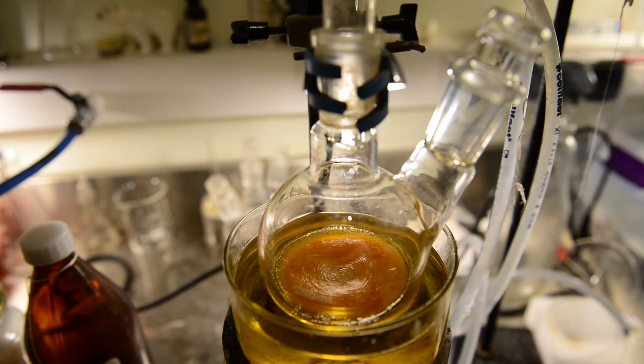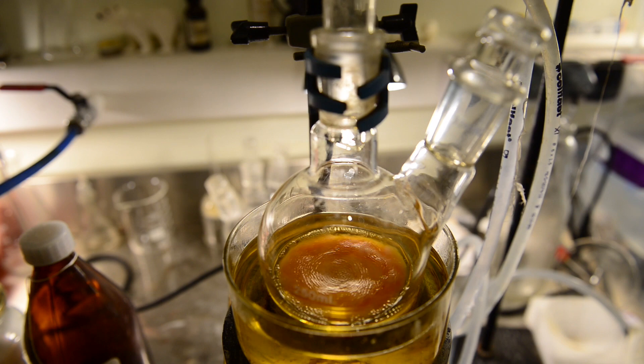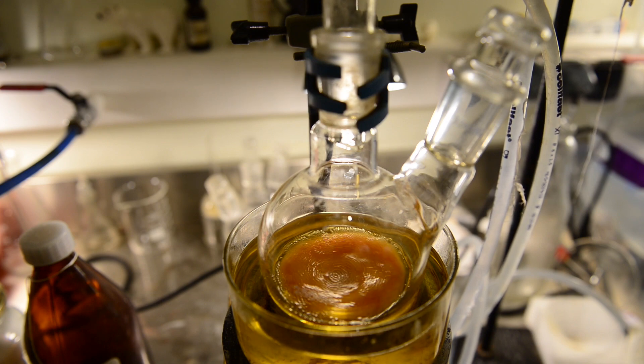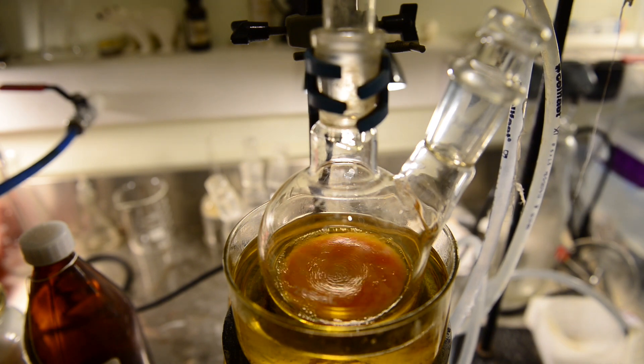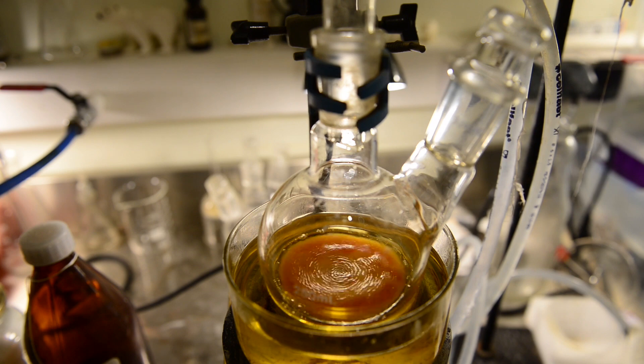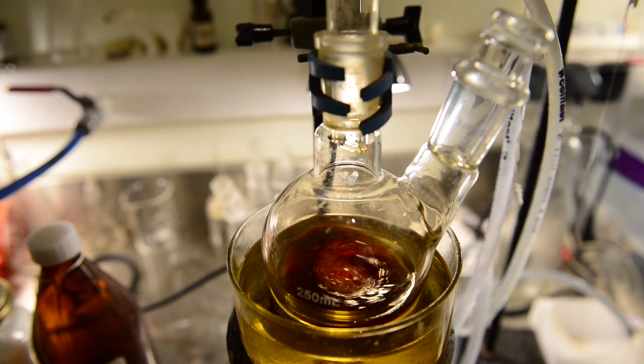After having all the ingredients added to the 250 milliliters reaction flask we start the heating and the stirring. The reflux condenser with ice-cold water circulation is attached to the top. We use a two-neck flask but one neck would be perfectly enough.